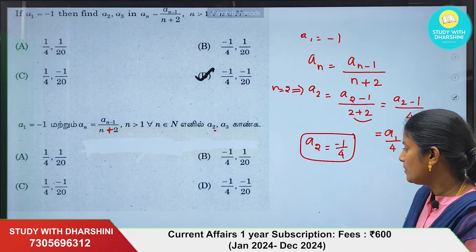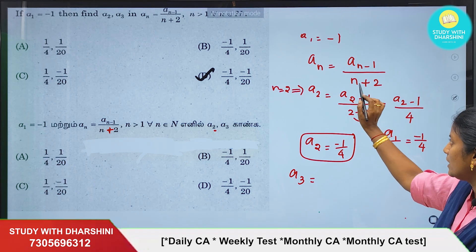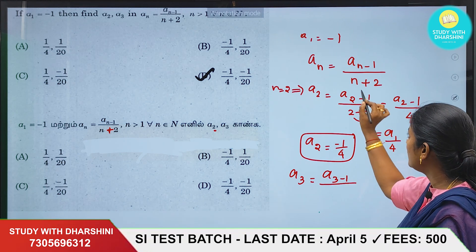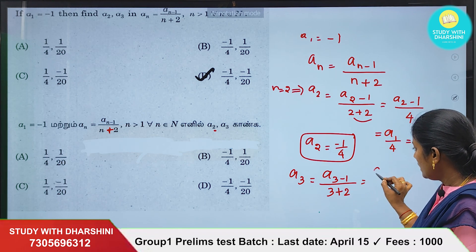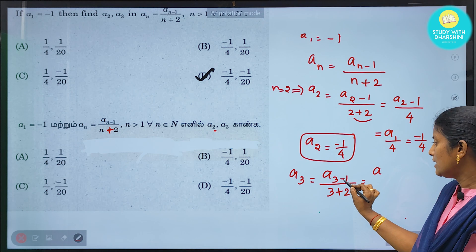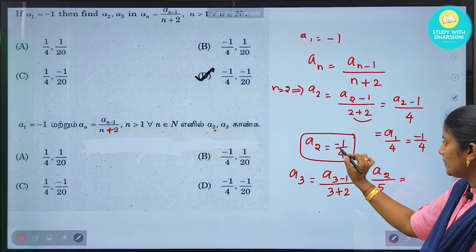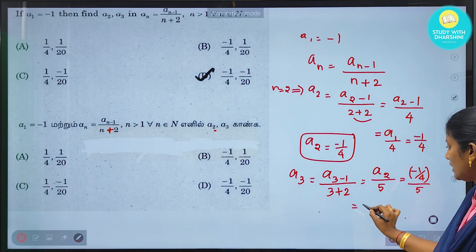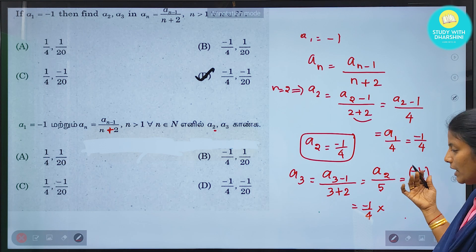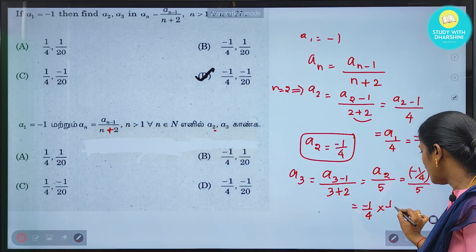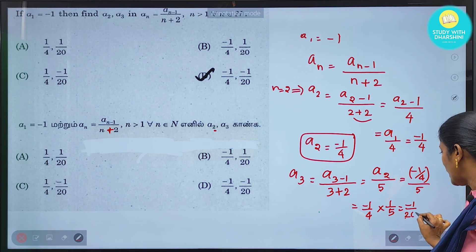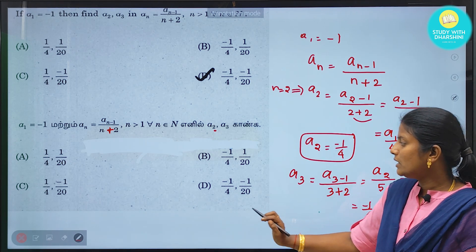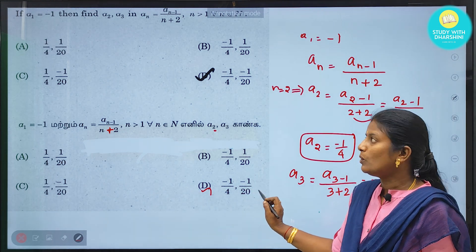For a3: replace n=3, so a3 = a2 / (3+2) = a2/5 = (-1/4)/5 = -1/20. So a3 = -1/20. The answer is option D: -1/4 and -1/20.